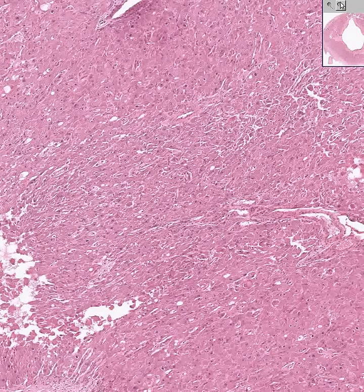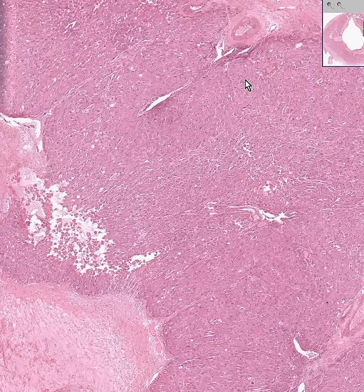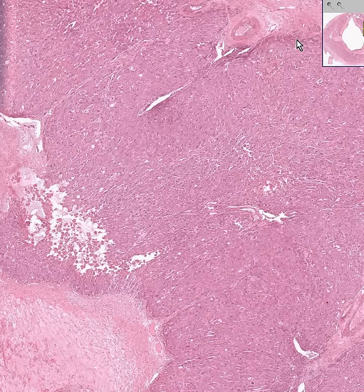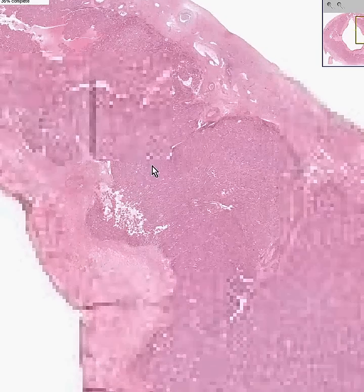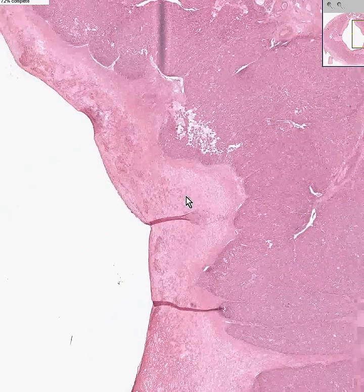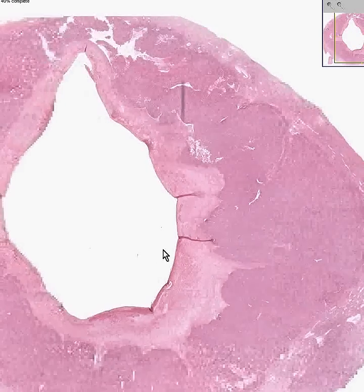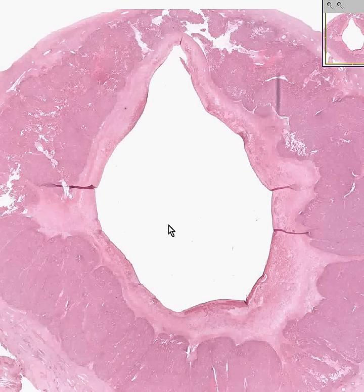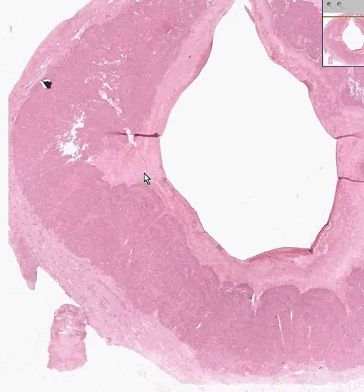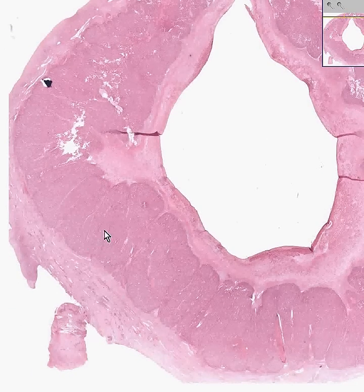The corpus luteum, if there is a pregnancy, can be a very significant fraction of the volume of the ovary itself — perhaps a third or a half. Otherwise, they generally are just a small fraction of the ovary's volume. As you can see here, they can have a lot of hemorrhage because they are very vascular. In this particular corpus luteum, it looks like there is a central liquefaction, which is why there's no luteal tissue in the center. But the endocrinologically active cells are these foamy cells all along here.